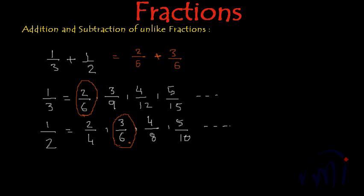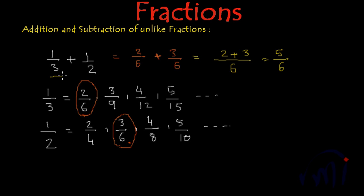And now we can do the same thing — we can add these two. Write down the denominator as it is and then add their numerators. So 2 plus 3 will be 5 and denominator will be 6. So if we add 1 by 3 and 1 by 2, we are going to get 5 by 6 as the result.